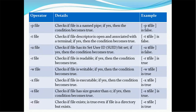Hyphen u file checks if the file has its set user ID, that is the SUID bit, set. If yes, the condition becomes true — use hyphen u followed by the file name. The remaining operators hyphen r, hyphen w, and hyphen x check permissions on the file. Hyphen r checks if the file is readable, hyphen w checks if it is writable, and hyphen x checks if it is executable. Each returns true if the respective permission exists.